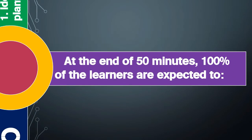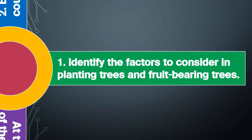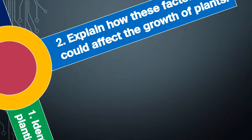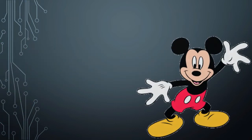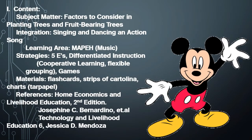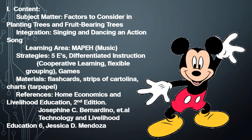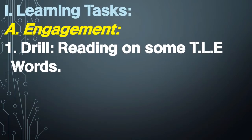Objectives: At the end of 50 minutes, 100% of the learners are expected to: 1) identify the factors to consider in planting trees and fruit-bearing trees; 2) explain how these factors could affect the growth of plants.